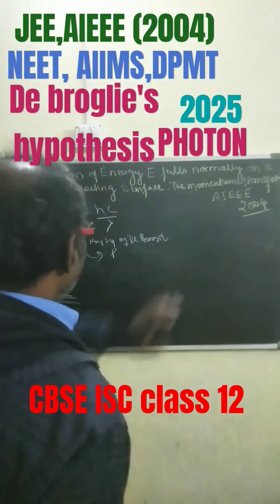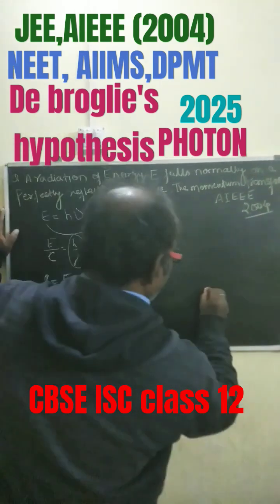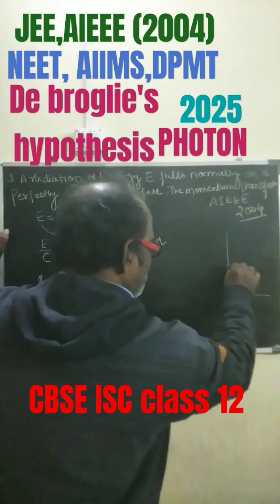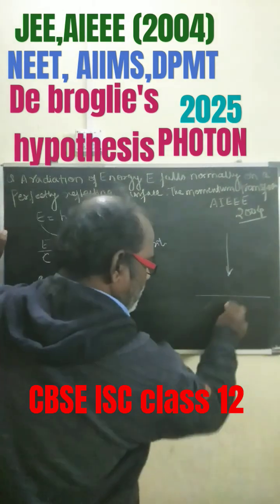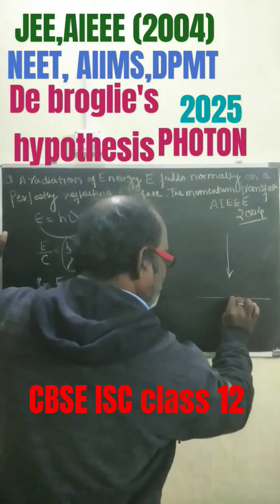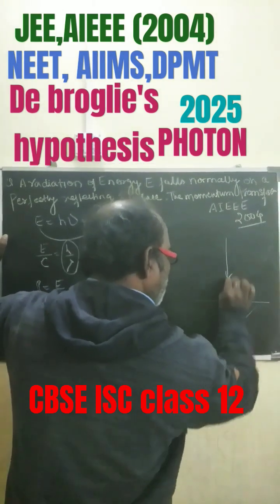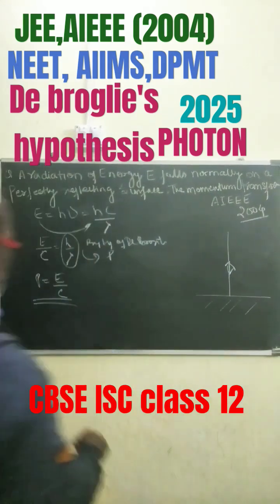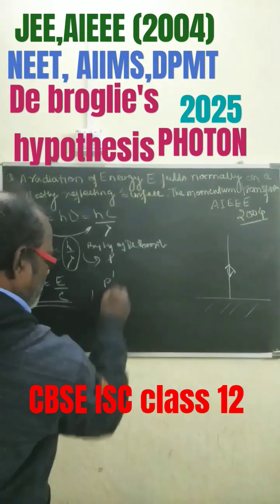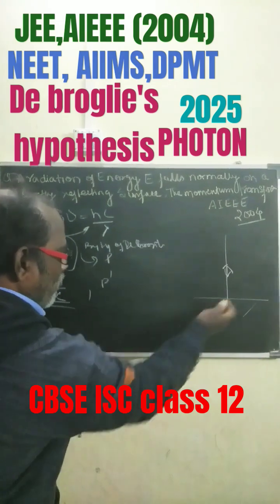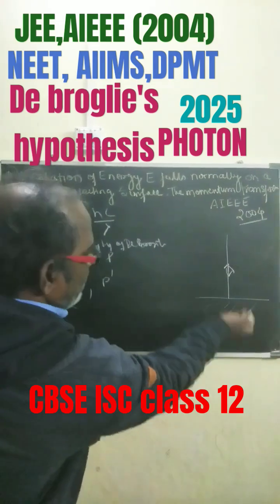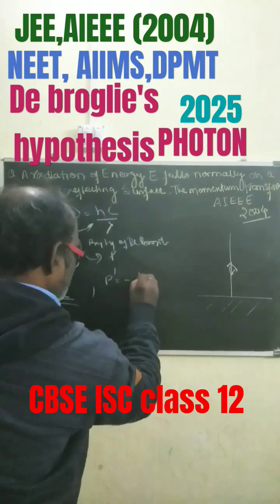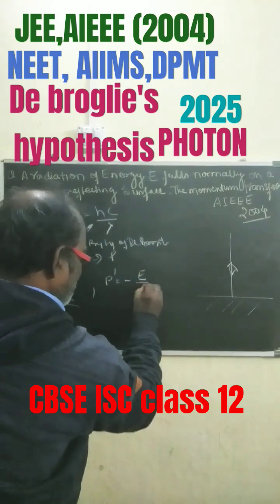So when it falls on a perfectly smooth surface — suppose this is the surface and the photon is falling on it — without any deviation, it will move back in the opposite direction having the same magnitude. So let P' be the momentum of the photon from the reflecting surface. P' equals to minus E by C.